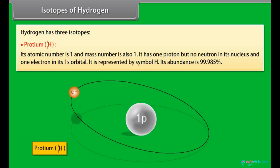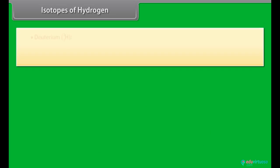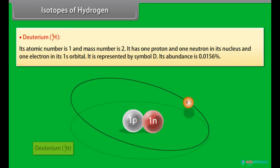Its abundance is 99.985%. Deuterium - Its atomic number is 1 and mass number is 2. It has one proton and one neutron in its nucleus and one electron in its 1s orbital. It is represented by symbol D.